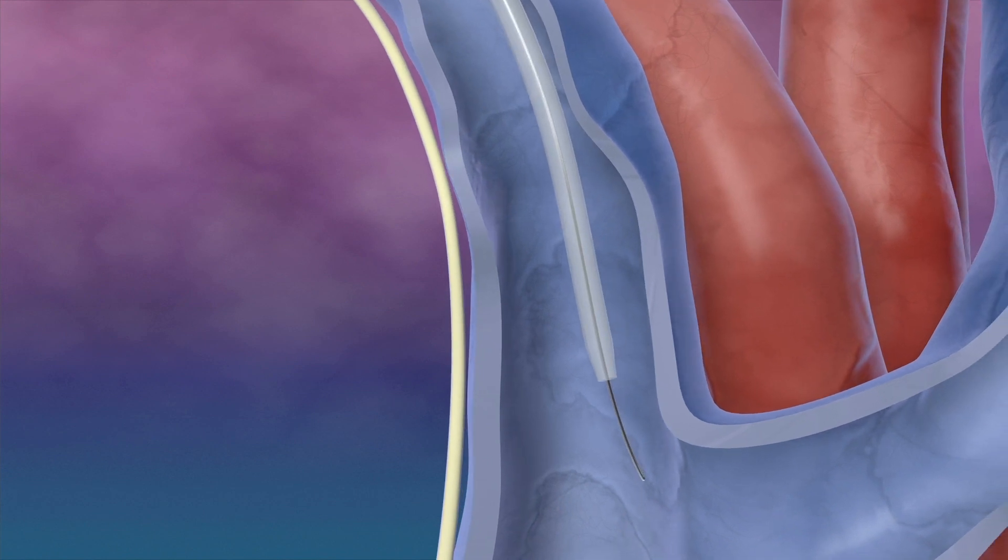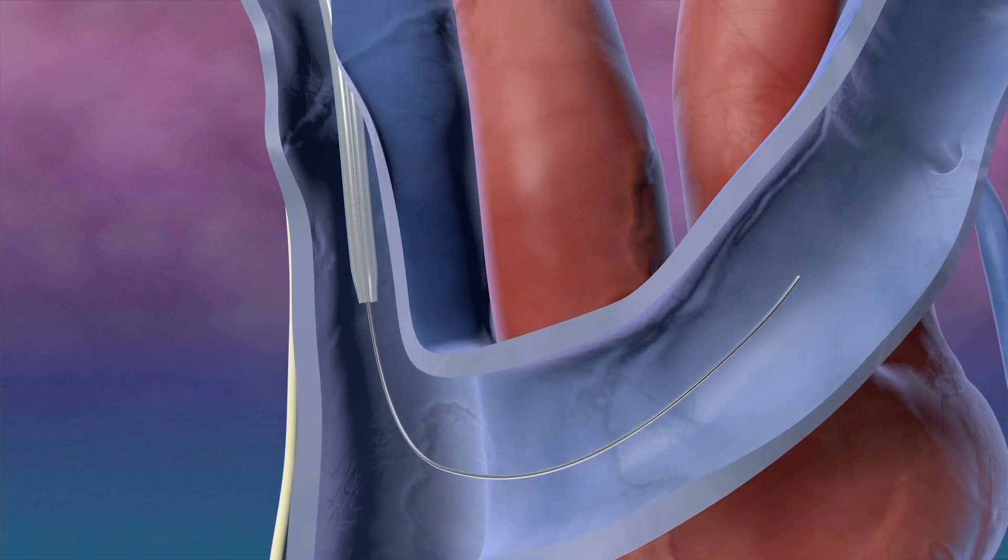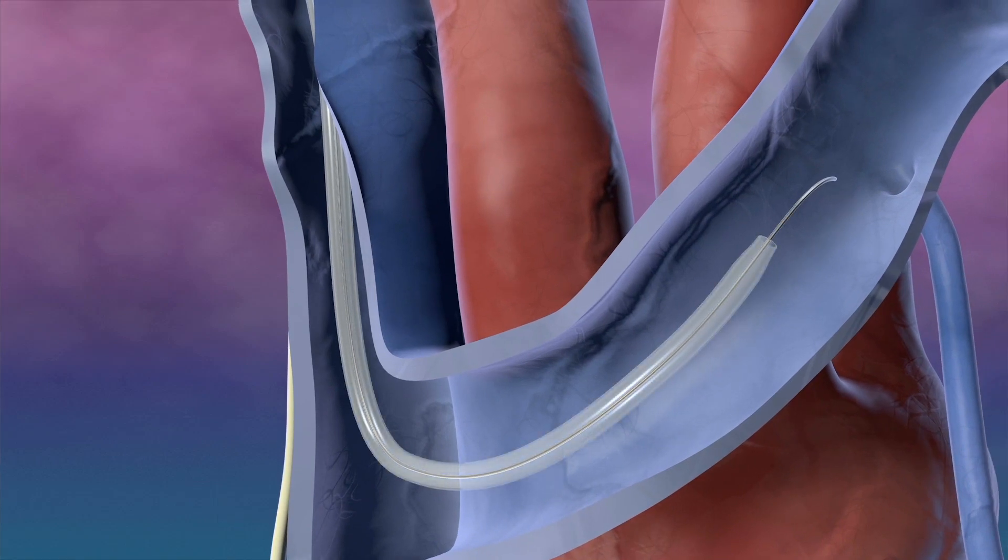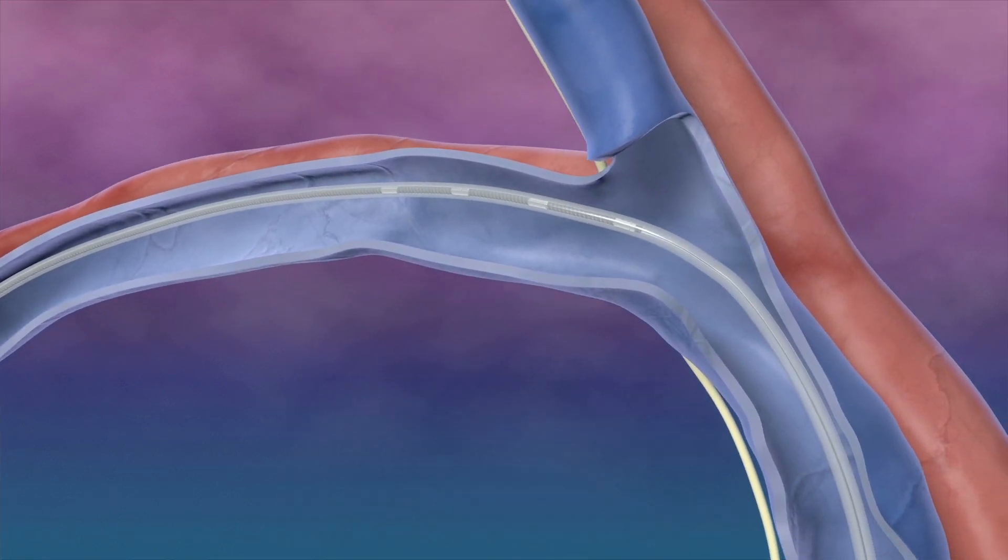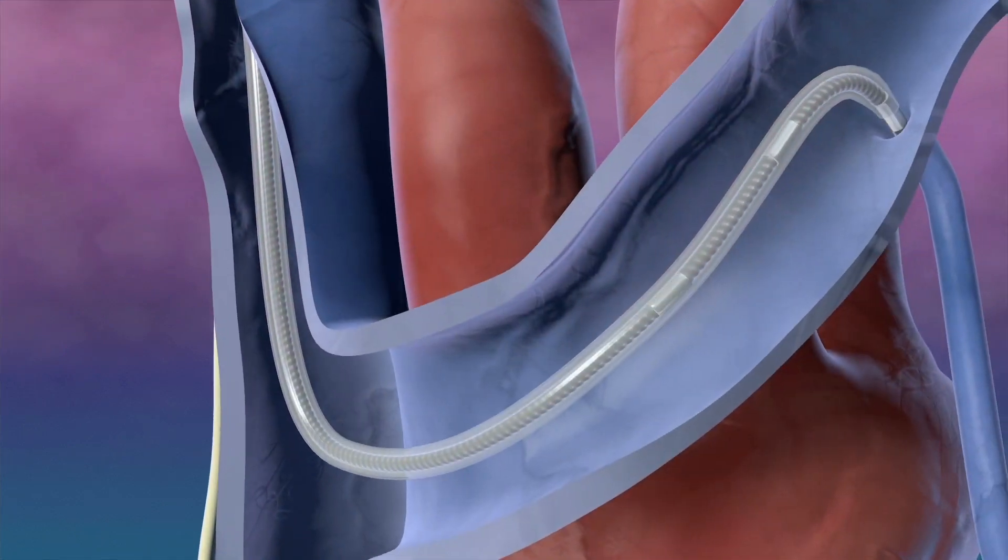The guide wire and catheter are then advanced into the subclavian vein. The guide wire is used to locate the target vessel and then navigated into the target vein. The left stimulation lead is deployed over the wire into the vein and positioned at the level of the left atrium.